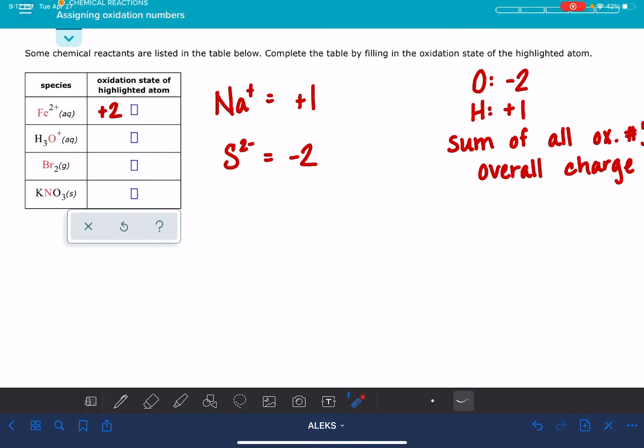For the next one, this is where we have a polyatomic ion. The highlighted atom is oxygen, and the oxidation number of oxygen is minus two. So that's pretty easy.